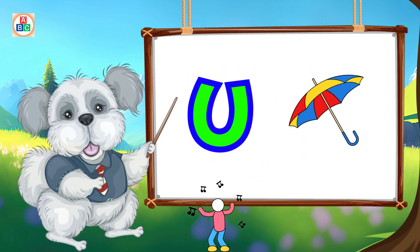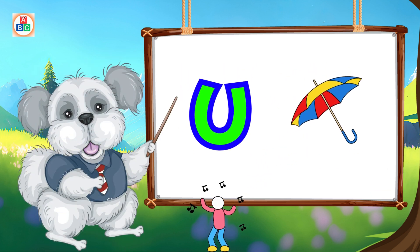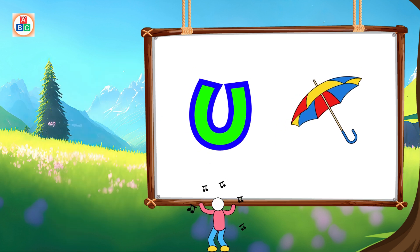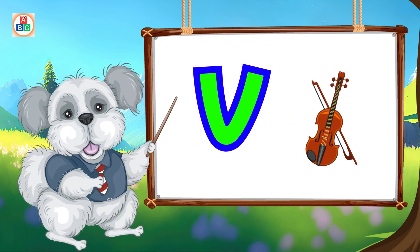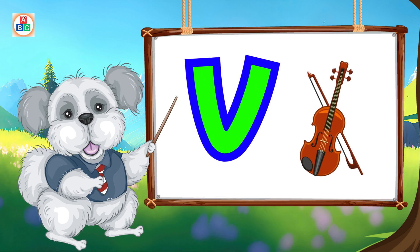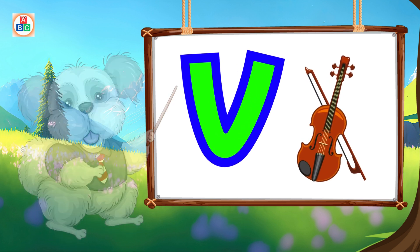U is for umbrella, u-u-umbrella. V is for violin, v-v-violin.